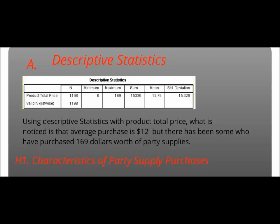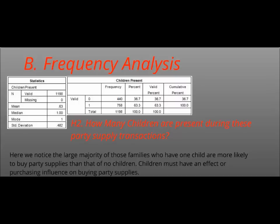For the next one, which was the frequency analysis, it would be based off of hypothesis two, which would entail how many children are present during these party supply transactions. Here we would notice the majority of those families who have one child or more are likely to buy party supplies compared to those with no children. That kind of goes along with my previous hypothesis — more children, more birthday parties, and you need all the party favors and things like that.